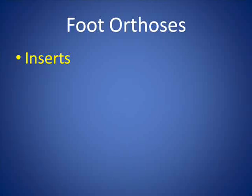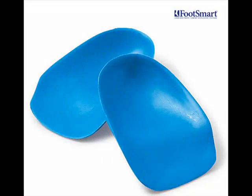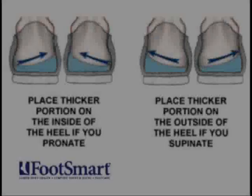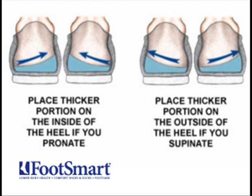Other orthotic devices inserted into the shoe can control the position of the calcaneus to correct supination or pronation, support the arches, and take pressure off heel spurs. These inserts are designed to cup the heel to keep the calcaneus from tipping sideways and causing supination or pronation. This particular orthosis is made with one side thicker than the other: the thicker portion is placed on the medial side of the heel if the patient's foot rolls in or pronates, and on the lateral side if the patient supinates.